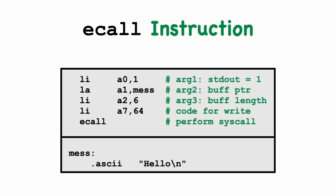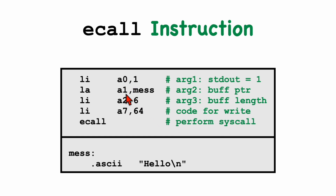If you want to invoke an operating system kernel function from user code, you need to use the e-call instruction — E stands for environment. In this code snippet we see an example where e-call is used to perform a system call on a RISC-V-based Linux system, calling the write system call to print a message. The arguments follow the calling conventions and are passed in the A registers. The first argument to write is a file code number — we use one for standard out — loaded with a load immediate instruction.